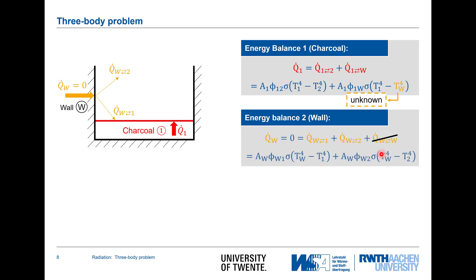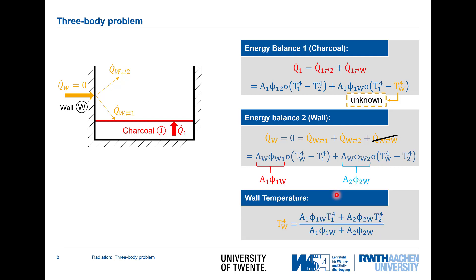Now let's put in the formula. I have a view factor wall to charcoal, the area of the wall, and a view factor of wall to grilled object, with the unknown wall temperature and the known temperatures of one and two. Making use of the reciprocal rule for one-to-wall and two-to-wall, I can evaluate and get an equation which I can then solve for the unknown wall temperature.